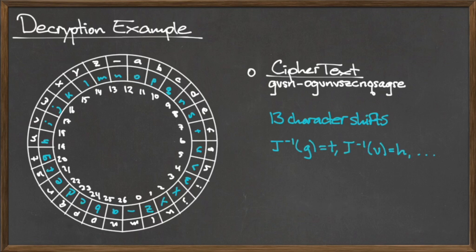Now to decrypt the message and recover the original plaintext, we read from the inner disk outward. In terms of a function, reading from the inner ring outward is applying the decryption function J-inverse.